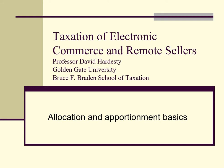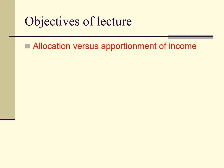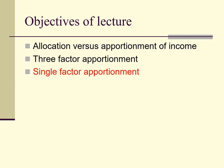Hi, this is David Hardesty, and in this lecture we continue our study of state income taxation of electronic commerce with a discussion of the basics of the allocation and apportionment of income. The objectives of this lecture are to learn the difference between the allocation of income and the apportionment of income, understand the basics of three-factor apportionment, understand the basics of single-factor apportionment, and learn the basic theories of assigning receipts to states.